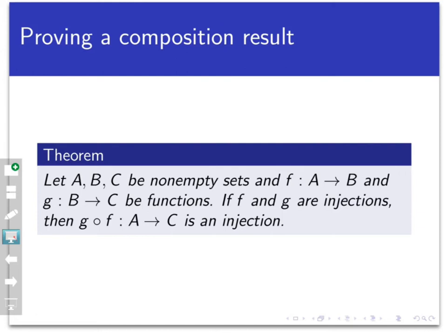Then we're going to prove that if f and g are both injections, then g circle f is also an injection. Again, notice here that f circle g would not make mathematical sense because the co-domain of g doesn't equal the domain of f. So the only composition here that makes any sense at all is g circle f.